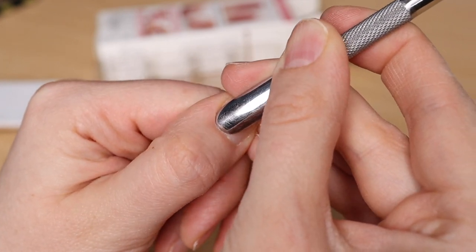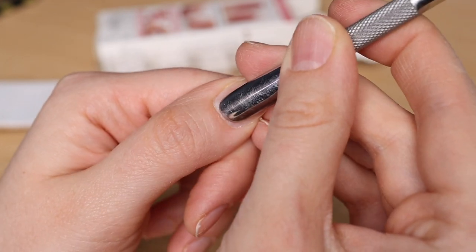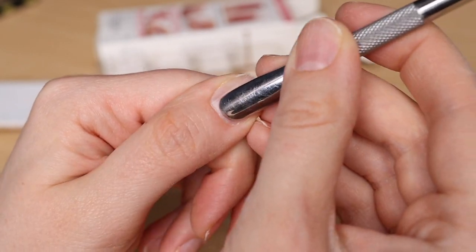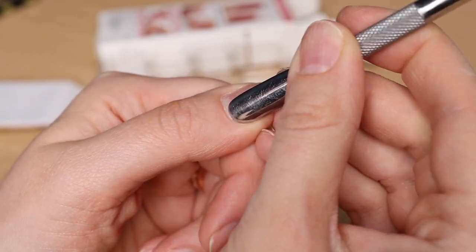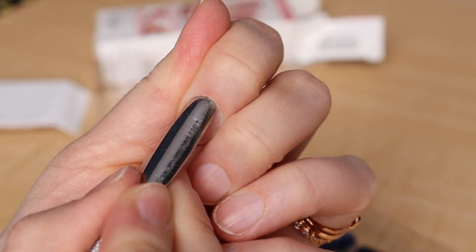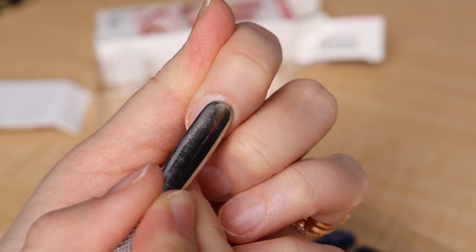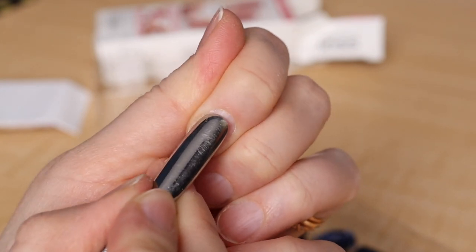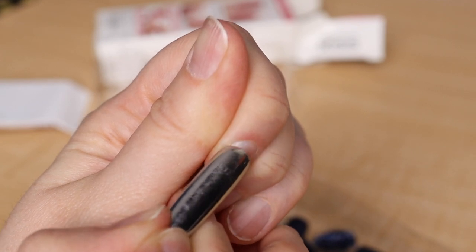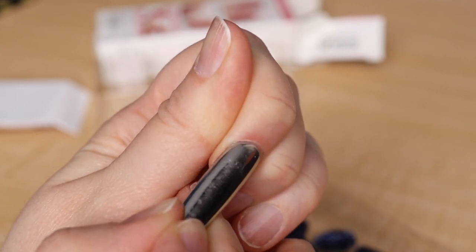Some people trim the cuticle. I don't do that because it tends to grow jagged, plus you have a chance of accidentally injuring the finger, bleeding. So I just push it back. Even if it looks like there is no cuticle, I would still push gently. Don't put a lot of pressure on the nail. You don't want to damage anything. Right there, there are little pieces of skin kind of coming off.